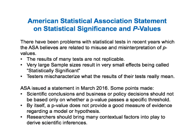There have been problems associated with statistical tests in recent years which the American Statistical Association believes are related to misuse and misinterpretation of P values. For example, the results of many tests have not been replicable. Very large sample sizes result in effects being called statistically significant when they are too small to be of practical significance. And sometimes testers mischaracterize what the results of their tests really mean. The ASA issued a statement in March 2016. Some points they made are: scientific conclusions and business or policy decisions should not be based only on whether a P value passes a specific threshold. By itself, a P value does not provide a good measure of evidence regarding a model or hypothesis. And researchers should bring many contextual factors into play to derive scientific inferences. To view the statement, do a web search on ASA statement on P values.